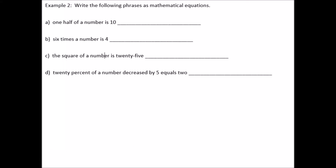We're going to do the same thing for example 2, but this time we're actually going to write full equations. An equation is expressing that two things are equal — two expressions are equal to one another. One half of a number, so that's one half of n, equals 10.